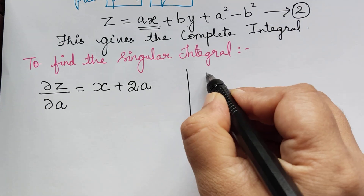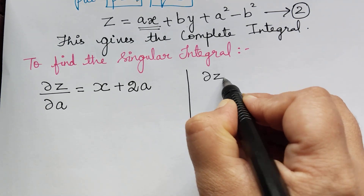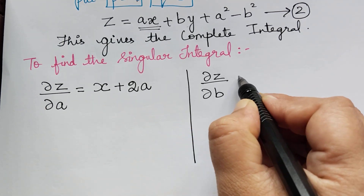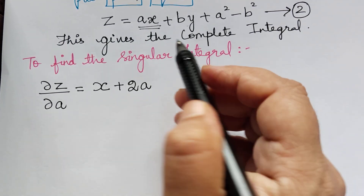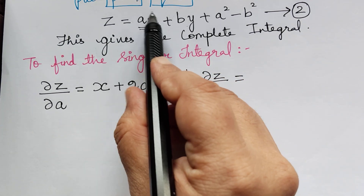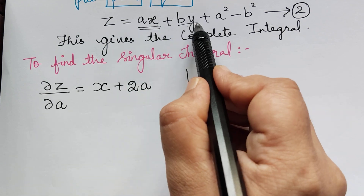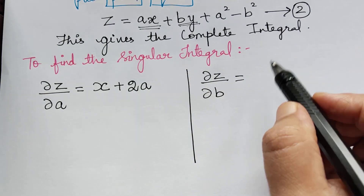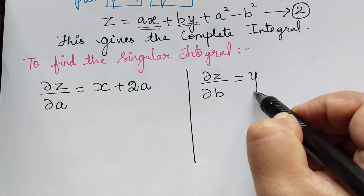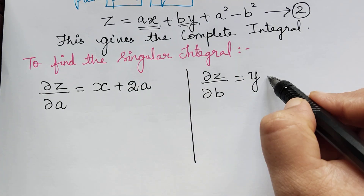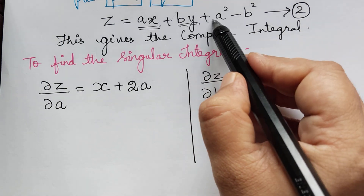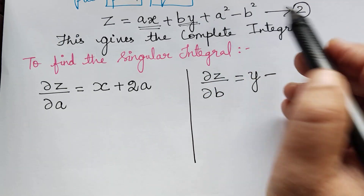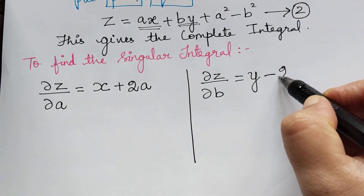In a similar way, differentiating equation 2 partially with respect to b, we get ∂z/∂b = y - 2b, since differentiating by gives y and differentiating -b² gives -2b.